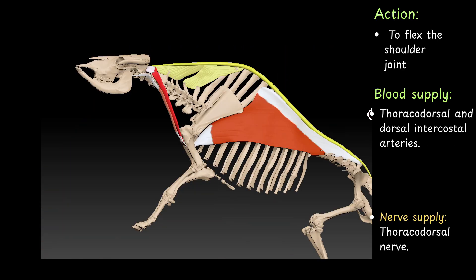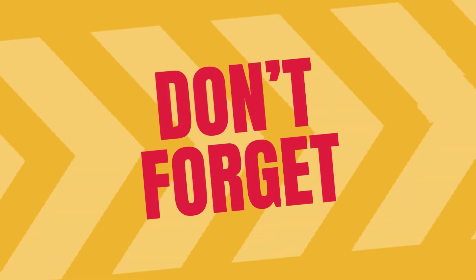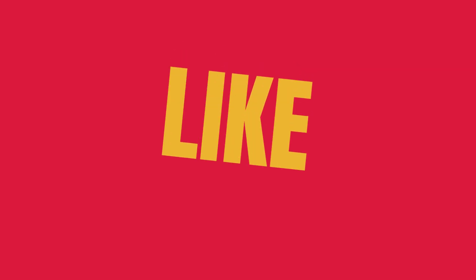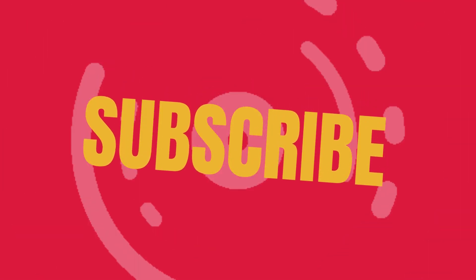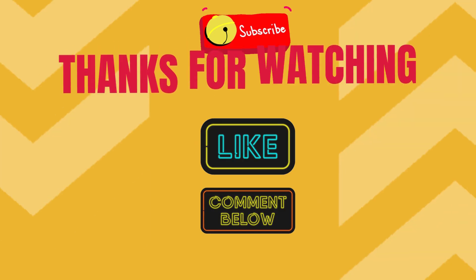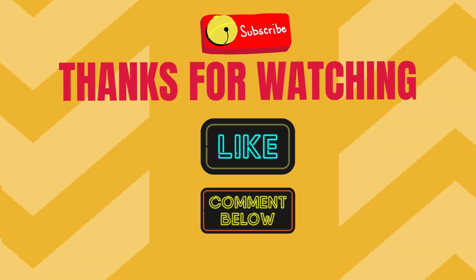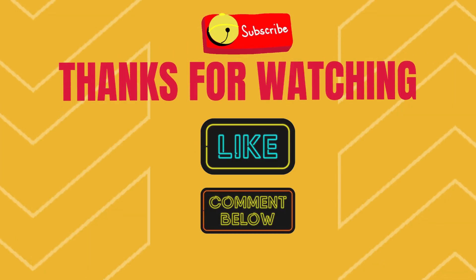Action: to flex the shoulder joint. Blood supply: thoracodorsal and dorsal intercostal arteries. Nerve supply: thoracodorsal nerve. Thanks for watching. If you enjoyed the video, please give it a like, share it with your friends, and let me know what you think in the comments.